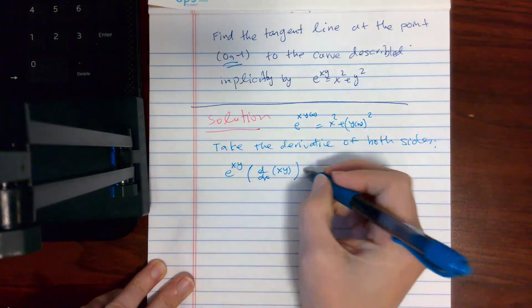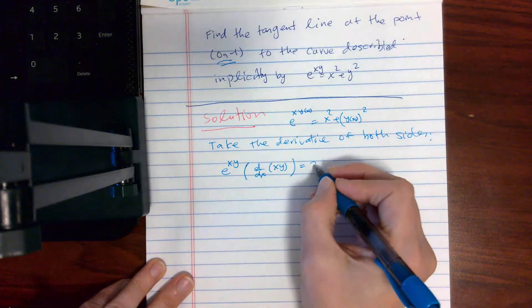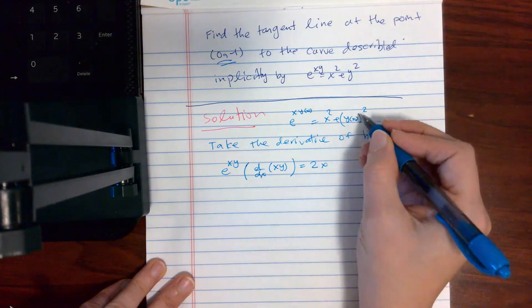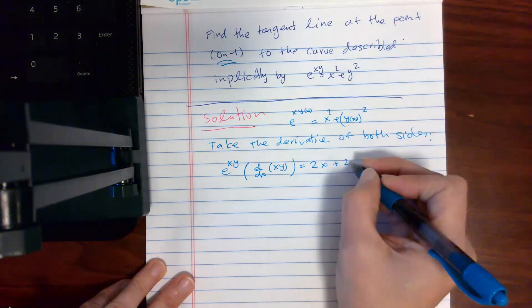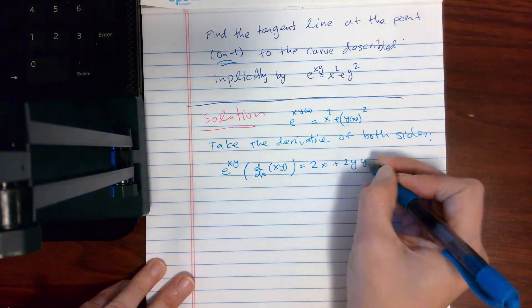And then derivative of x squared is 2x, derivative of y squared is going to be 2y y'.